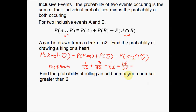Reducing that fraction — both 16 and 52 are divisible by 4. 4 goes into 52 thirteen times, so the probability of drawing a king or a heart is 4 thirteens, or 4 out of every 13 times.